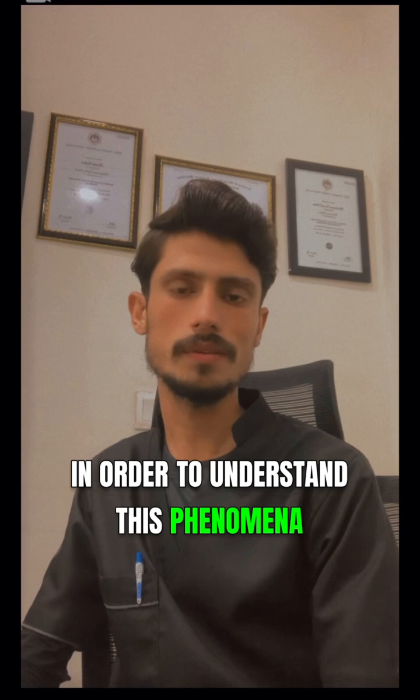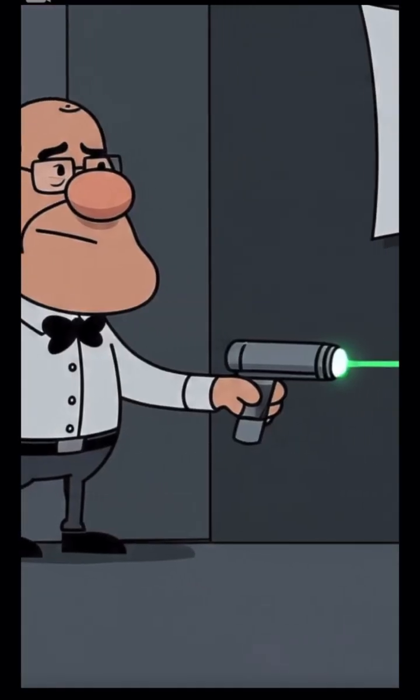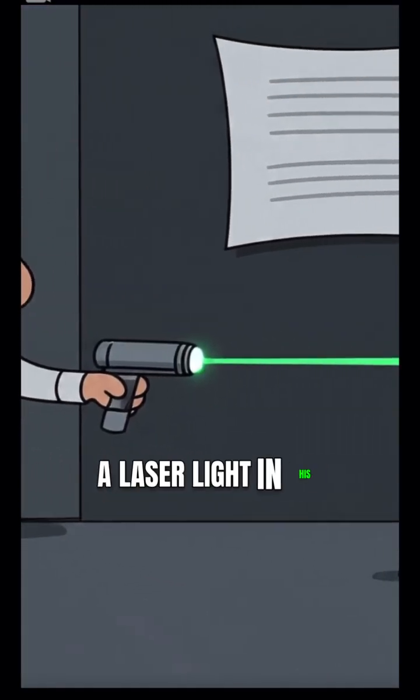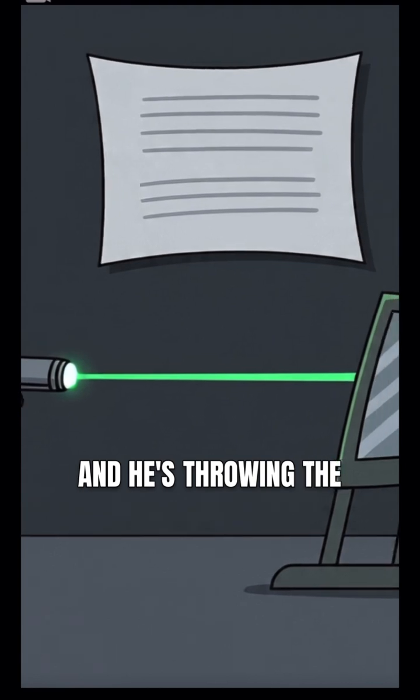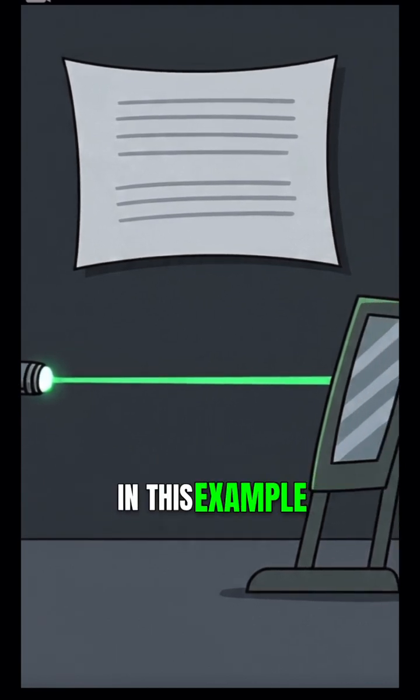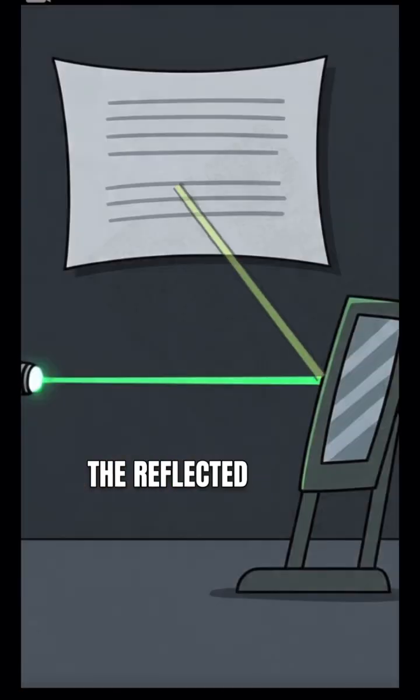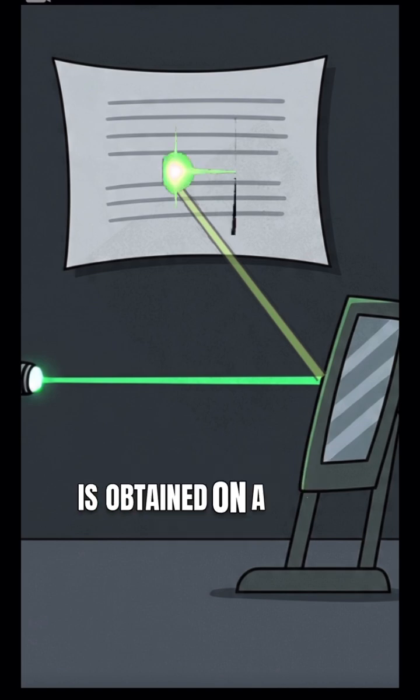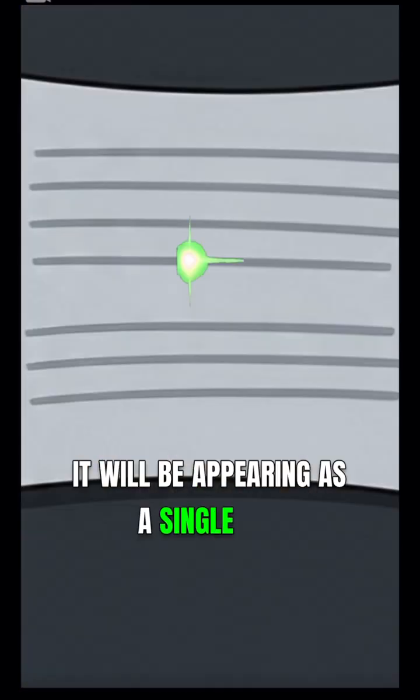In order to understand this phenomenon, we are going to take an example of a laser light. Consider a person holding a laser light and throwing the light on a reflector, let's say a mirror. The reflected ray is obtained on a paper, appearing as a single dot.